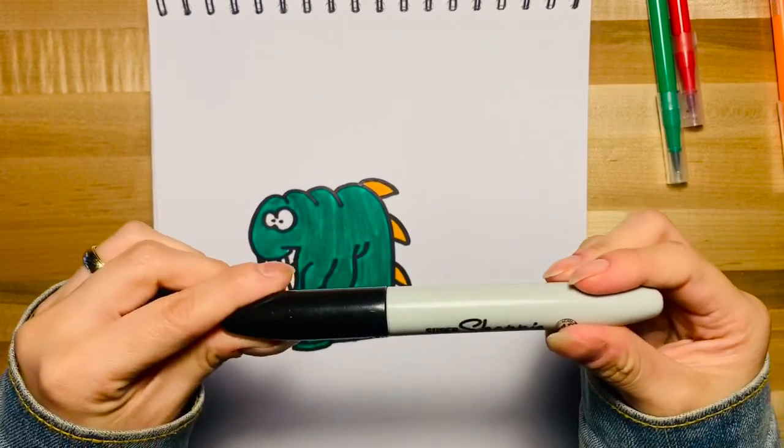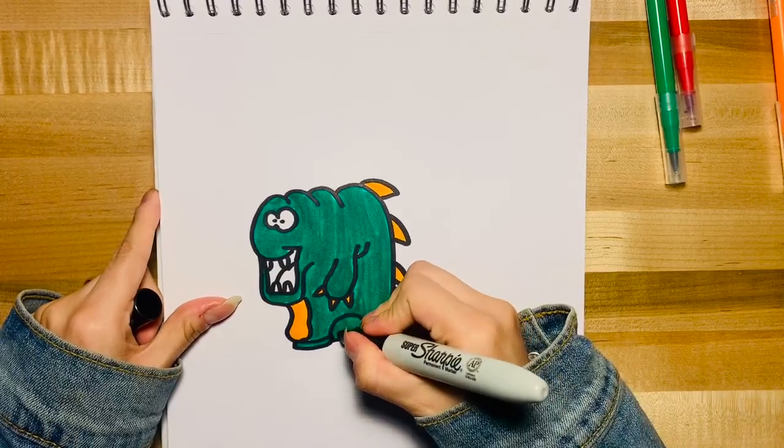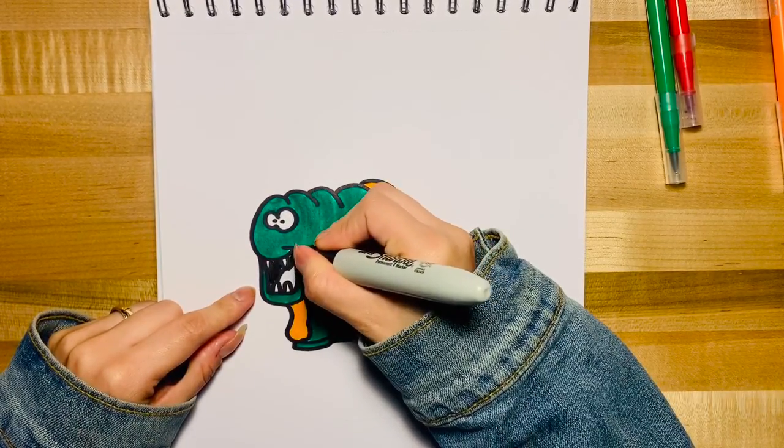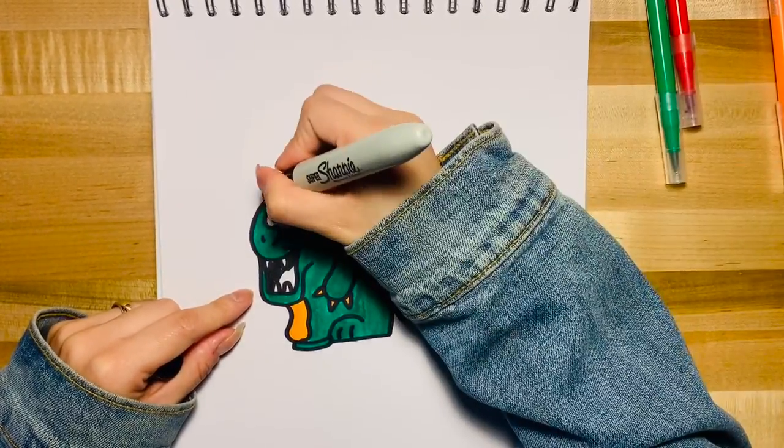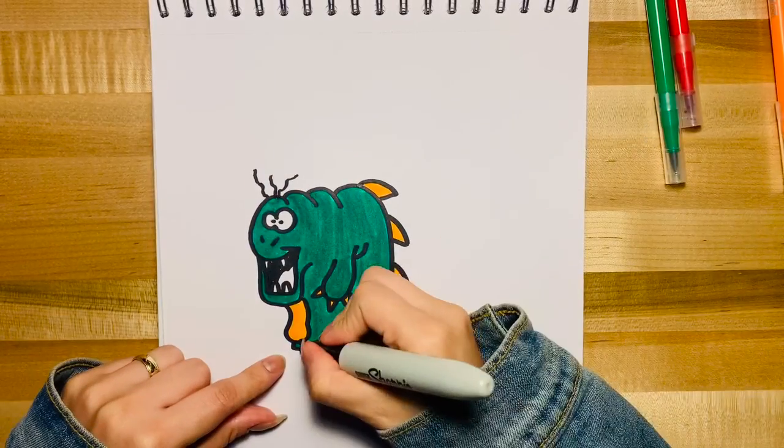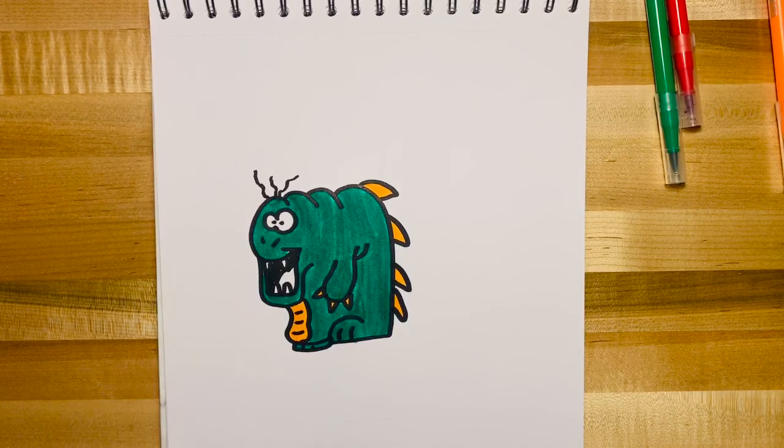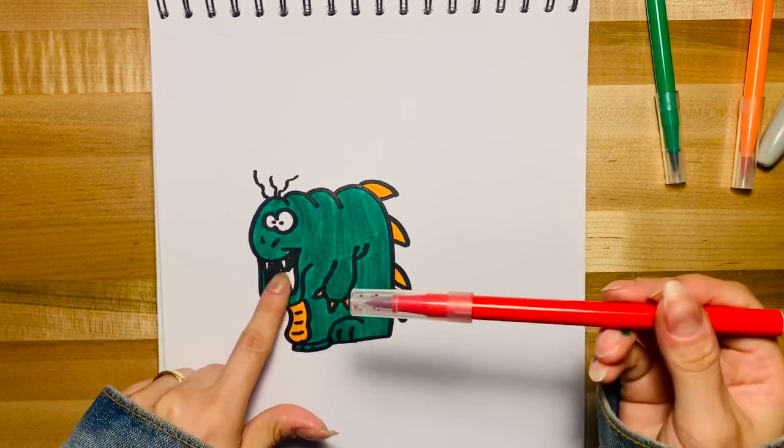Next, we're going to use our Sharpie to add some details. And now we're going to use the red to color in his tongue.